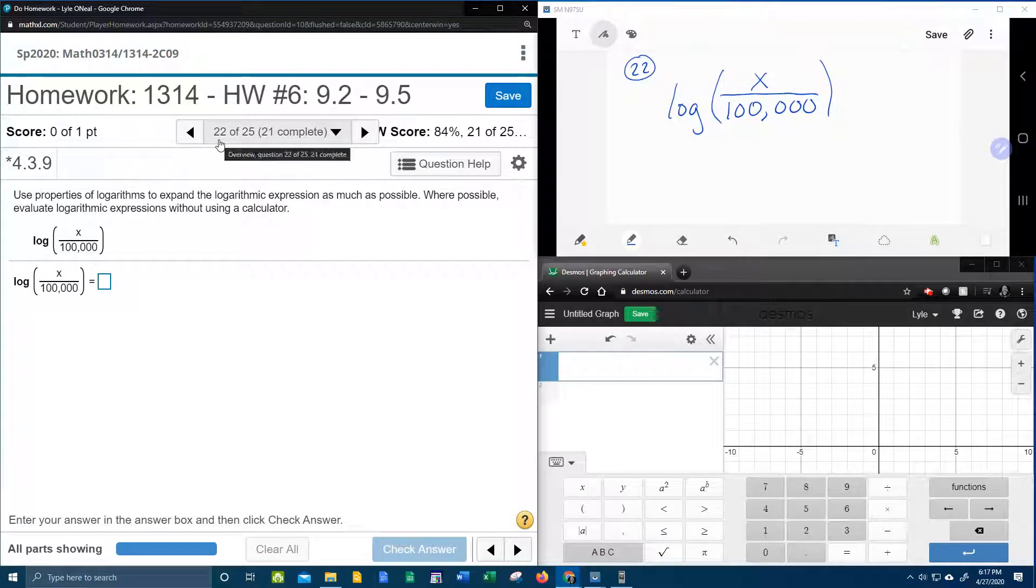Question number 22 from College Algebra homework number 6 in MyLabMath says: Use properties of logarithms to expand the logarithmic expression as much as possible. Where possible, evaluate logarithmic expressions without using a calculator. And we all know that really means use a calculator.